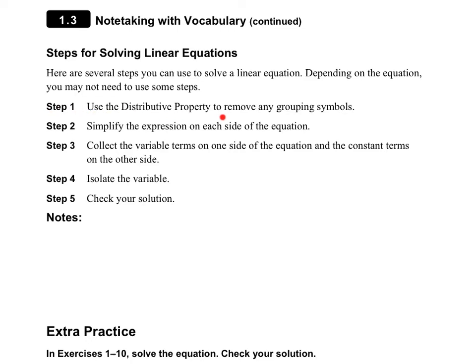Step 1 is: if you have parentheses, you need to use the distributive property to get rid of those parentheses. Step 2 is to simplify both sides of the equation — if you have a couple of x's on one side, put those together, or if you have constant numbers, combine those too. Step 3 is to move all variable terms to one side and all constant terms to the other side. Step 4 is to isolate the variable, and step 5 is to check your solution.